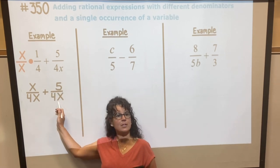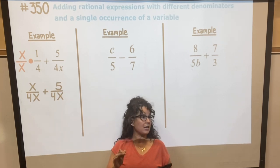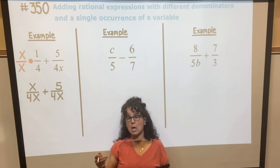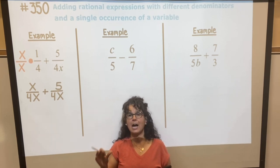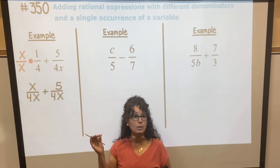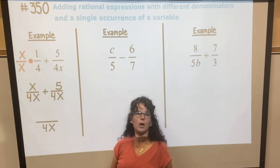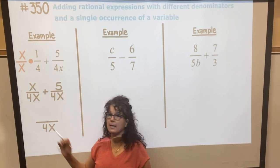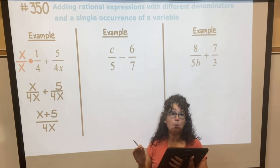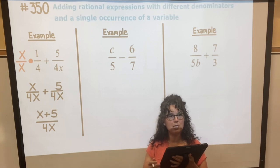But notice now the denominators are the same. Let's think back to just adding fractions with numbers. If I had 1 over 5 plus 2 over 5, I have 3 over 5. So you're just combining what's in the numerator over the common denominator. So we're gonna have over 4x and x plus 5 in the top. Okay, so then I'm almost done here. We have two more examples. If you can hold your conversations just until I'm done.